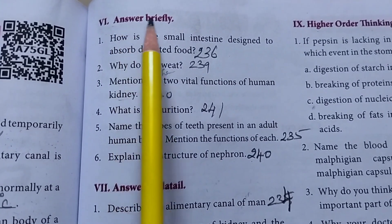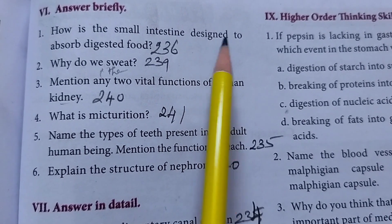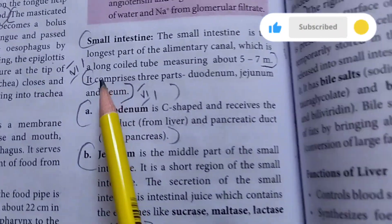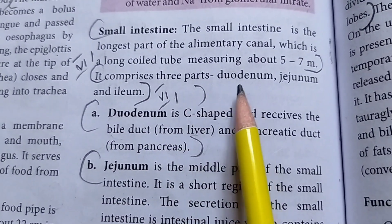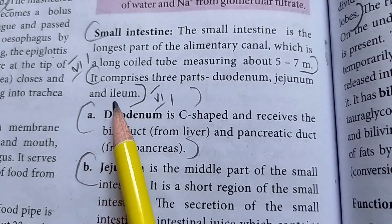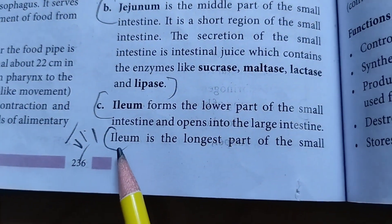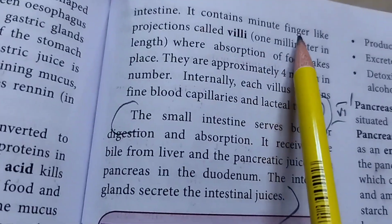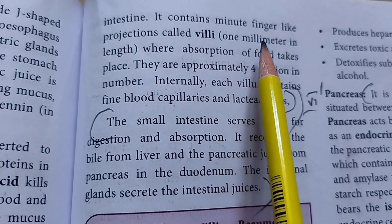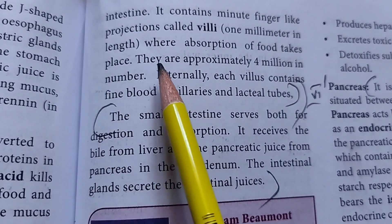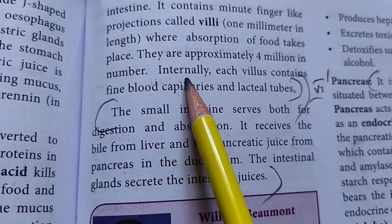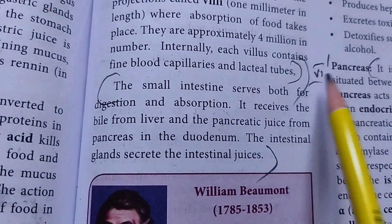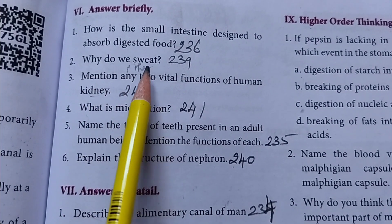Answer briefly, 1st question: How is the small intestine designed to absorb digested foods? The small intestine comprises 3 parts: duodenum, jejunum and ileum. Ileum is the longest part of the small intestine. It contains minute finger-like projections called villi, 1mm in length, where absorption of food takes place. They are approximately 4 million in number. Internally, each villus contains fine blood capillaries and lacteal tubes.